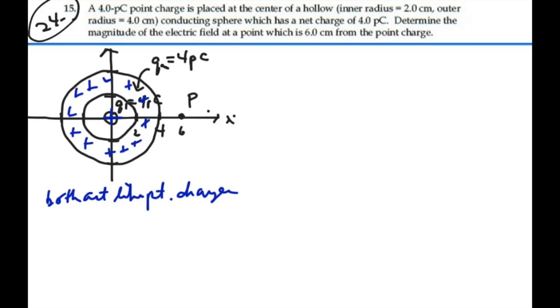So in that sense, we can actually get our total charge by just adding these two charges together, and then treat it like a point charge. So that's going to be four picocoulombs plus four picocoulombs, which would be eight picocoulombs.